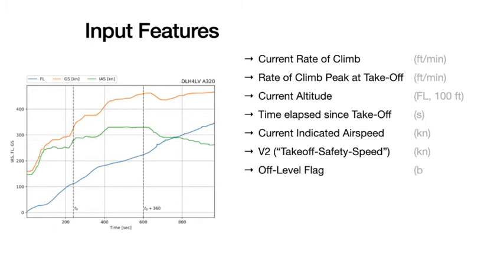Additional features include an off-level flag encoded as a boolean variable if the aircraft had to level off during its climb, the flight range as a categorical variable (short, medium, or long range), and the ICAO type code of the aircraft as a categorical variable.